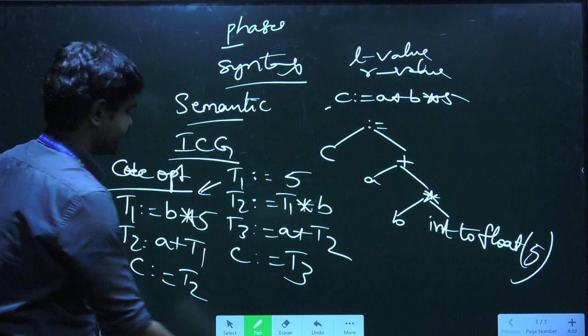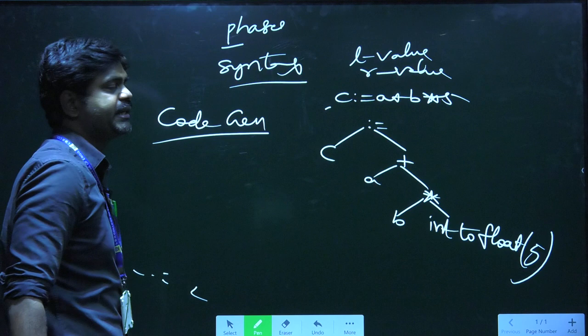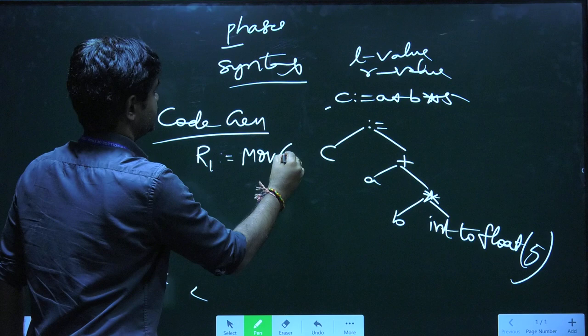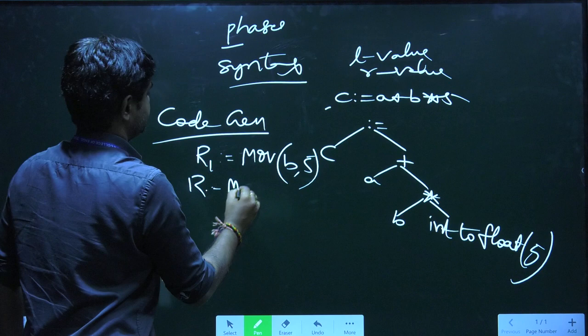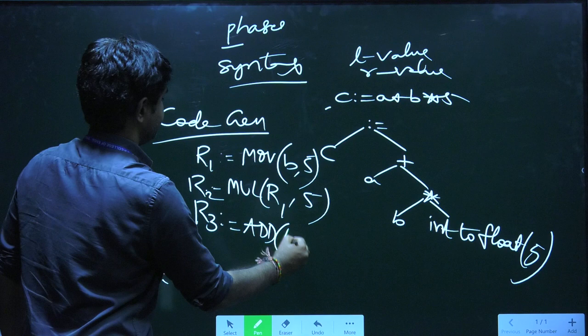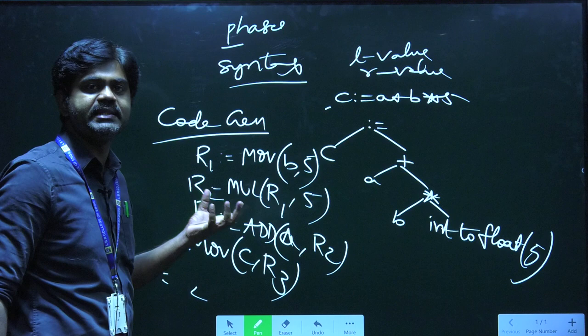Finally, code generation. In code generation, we consider different machine instructions: R1 equal to mul of B comma 5, R2 equal to mul of R1 comma 5, R3 equal to add of A comma R2, and finally mul of C comma R3. In code generation, we translate into actual machine-level instructions.